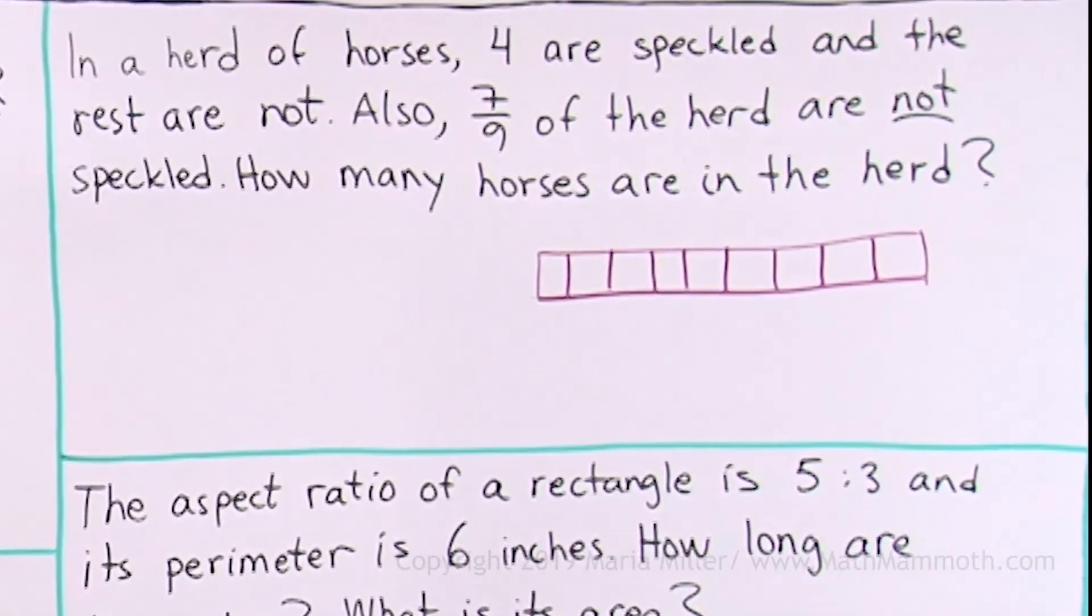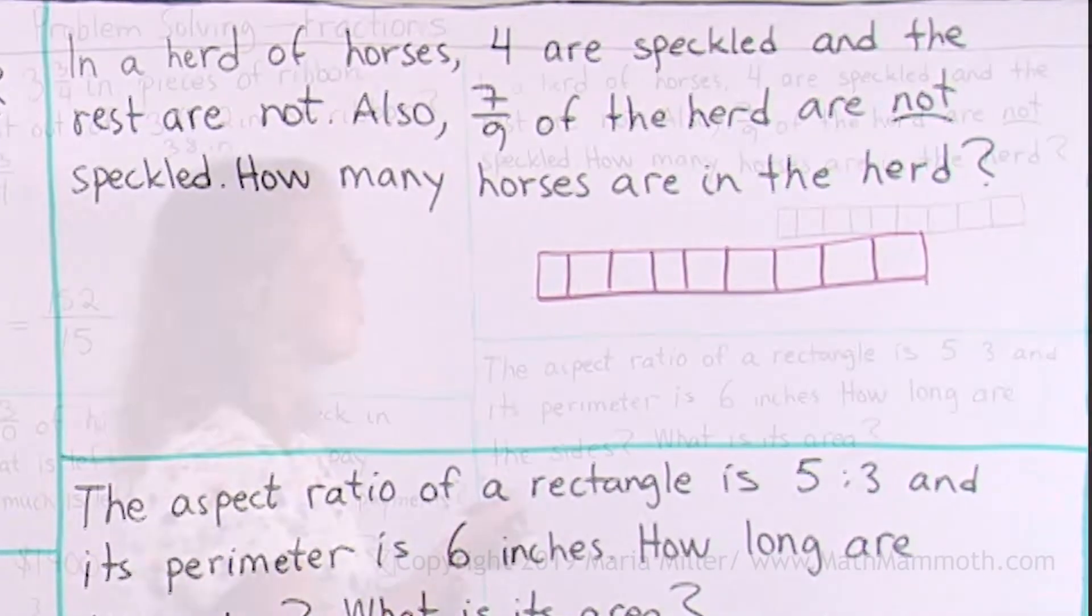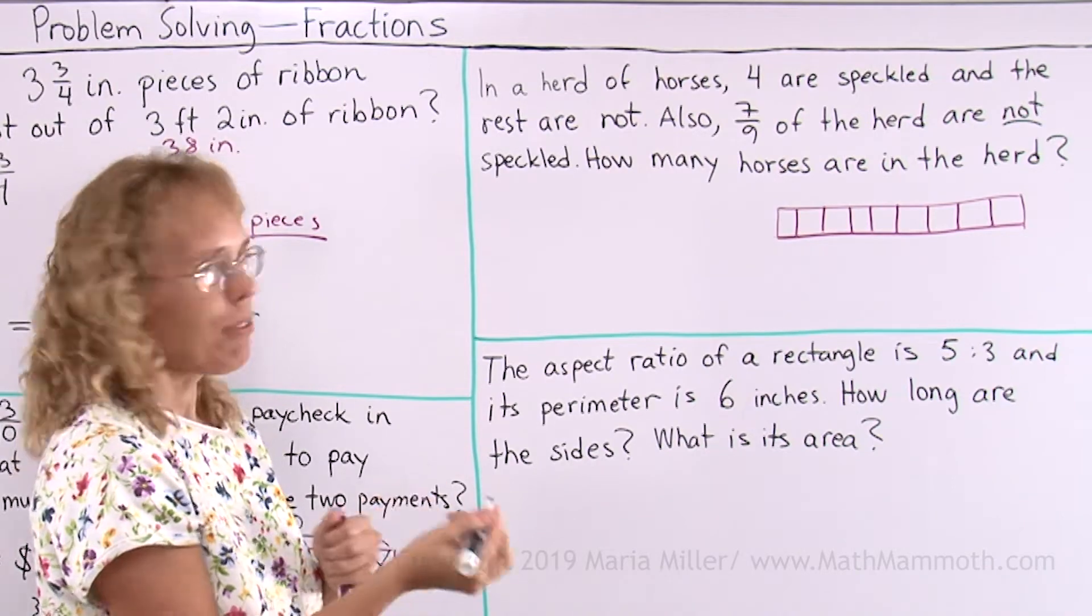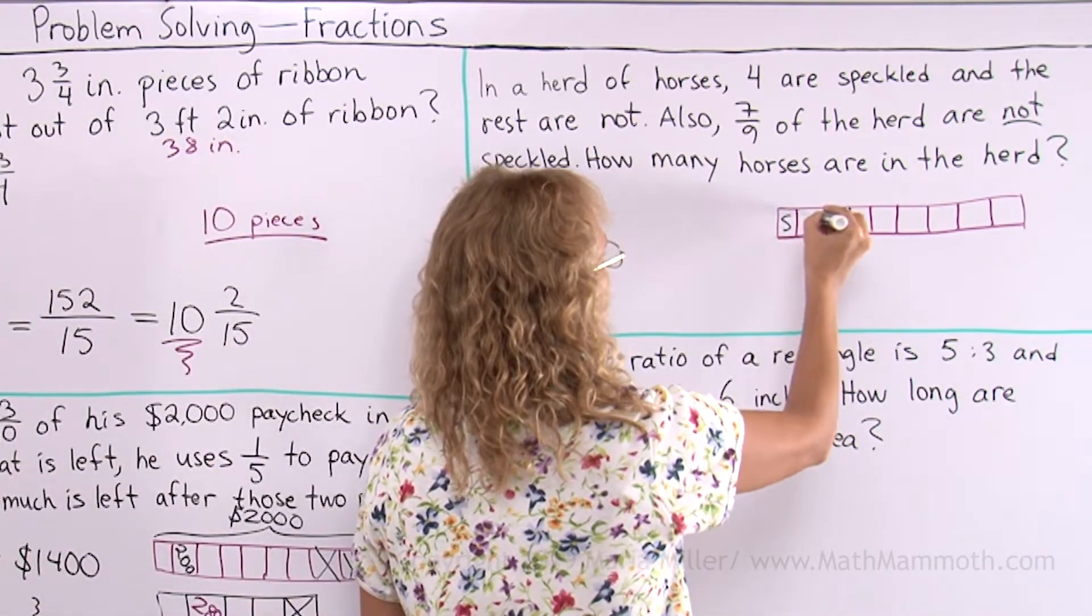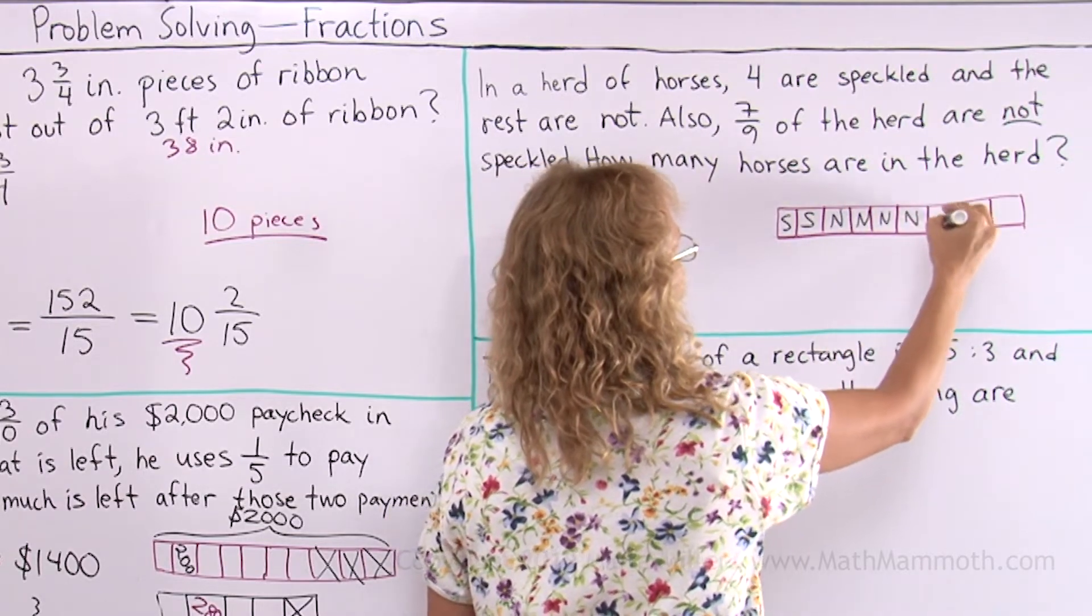Okay, we could mark the speckled with S. How many parts are speckled? What fraction of the horses are speckled? Well, 7 ninths are not, so 2 ninths are speckled and the rest are not—N for not.